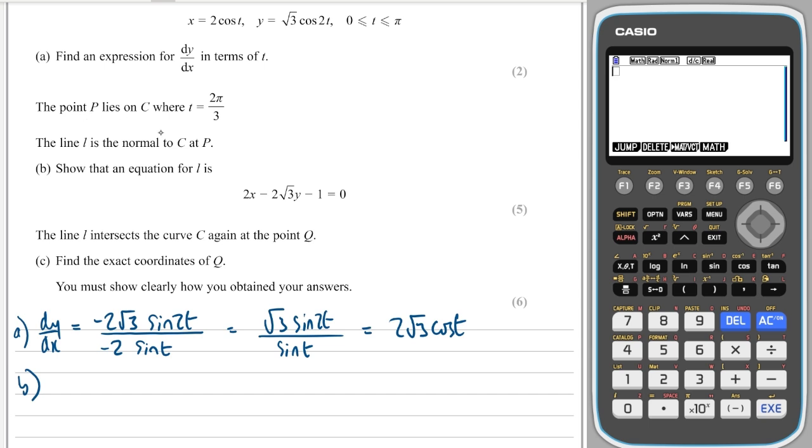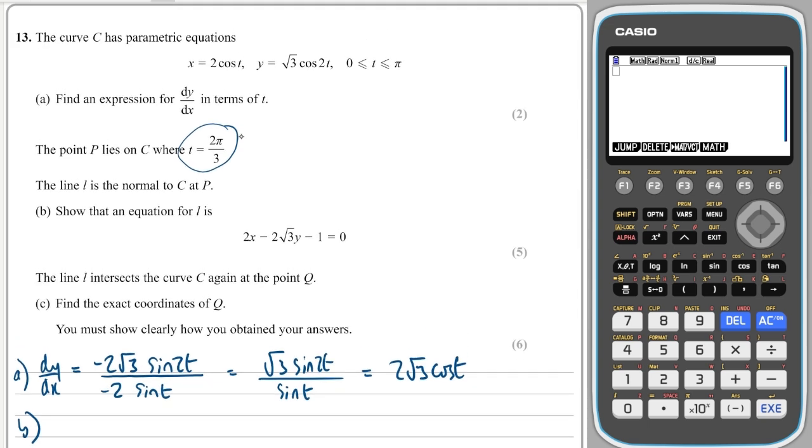Part b: the point P lies on c where t is equal to this. The line l is normal at P. Show that the equation for line l is this. We're going to need a couple of things here: we're going to need the x and y coordinates when t equals that.